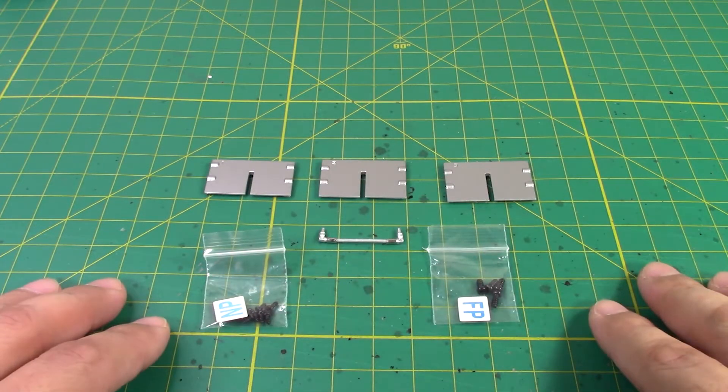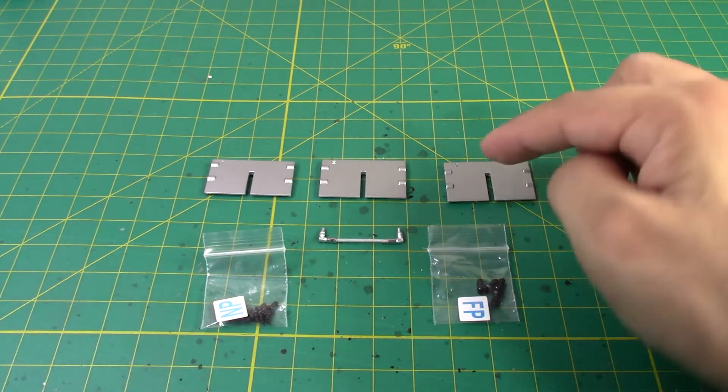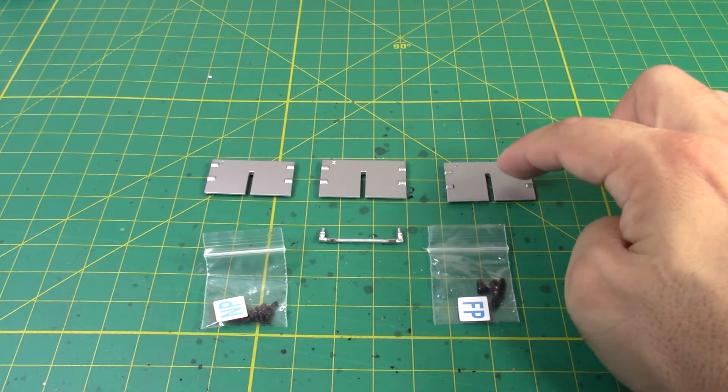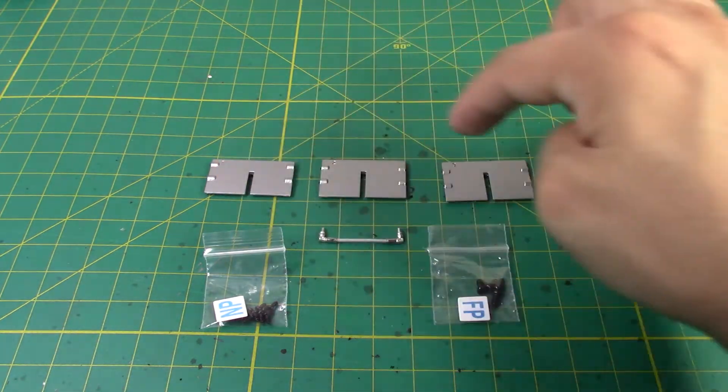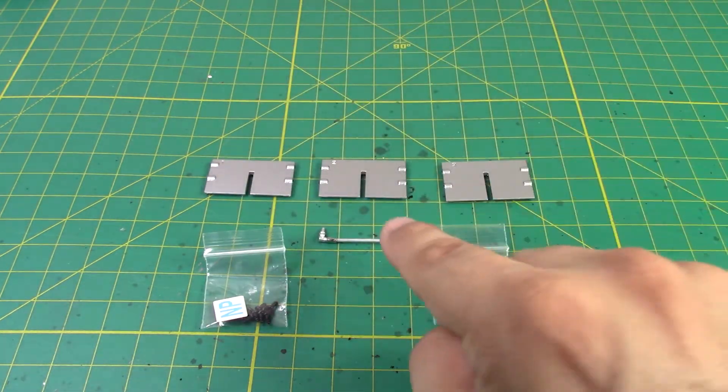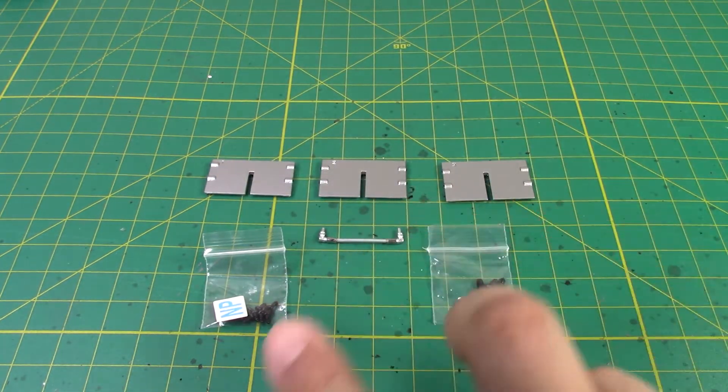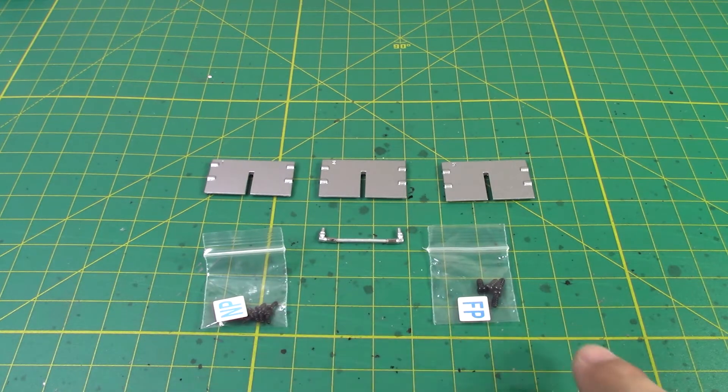Here we have the parts for issue 122. A few more pieces to work with here. We have these vanes, what the magazine is calling them. They're going to go inside of the cowl piece. And they are numbered. So they have one, two, one, three. We have another cable section and some more screws, NP and FP.